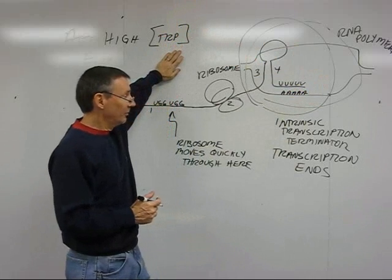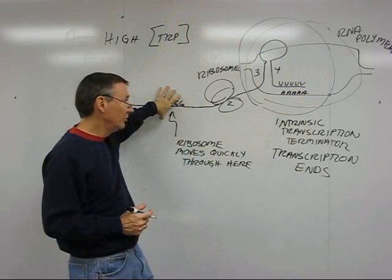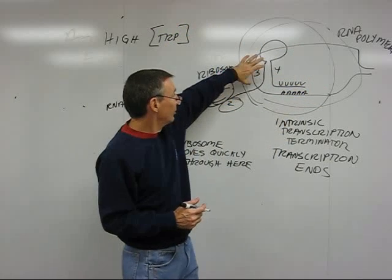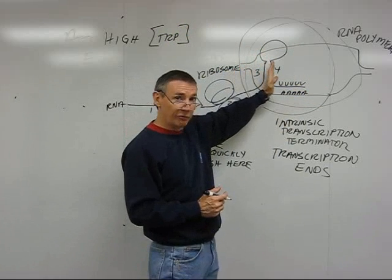Because the tryptophan level was high, the ribosome was able to get through region 1 quickly, got to region 2, preventing 2 and 3 from pairing, allowing 3 and 4 to pair.